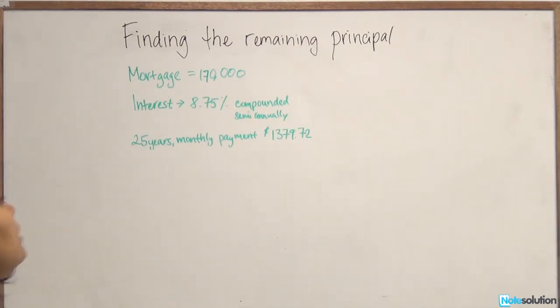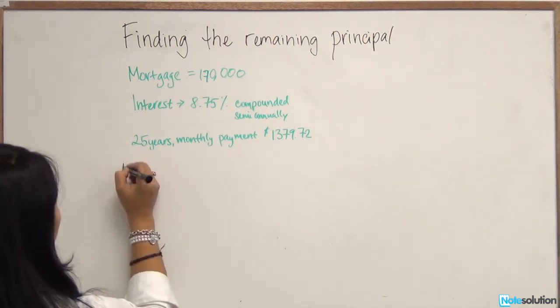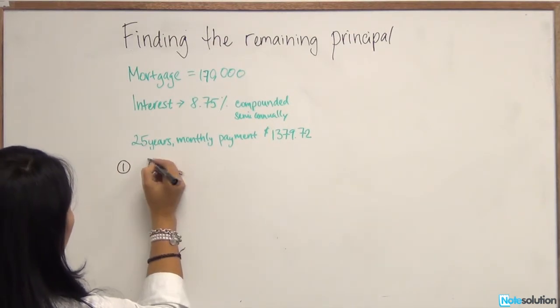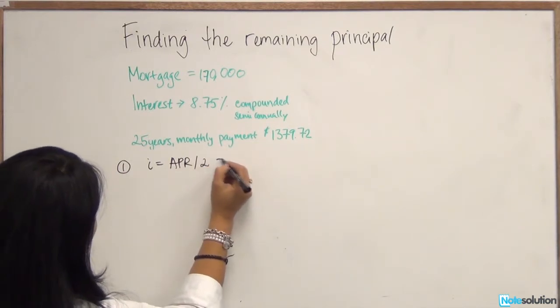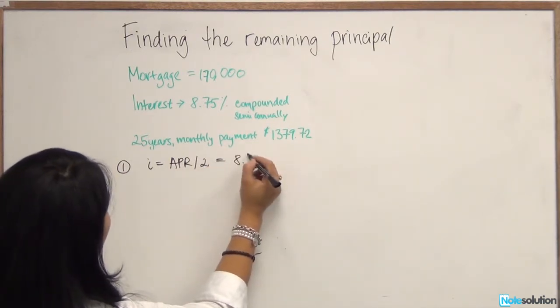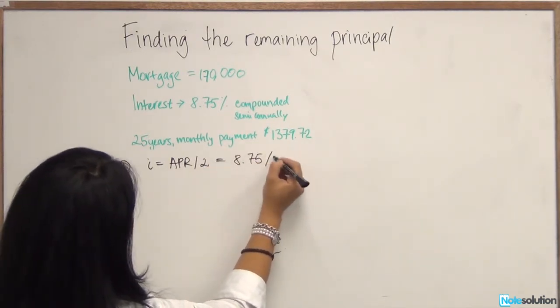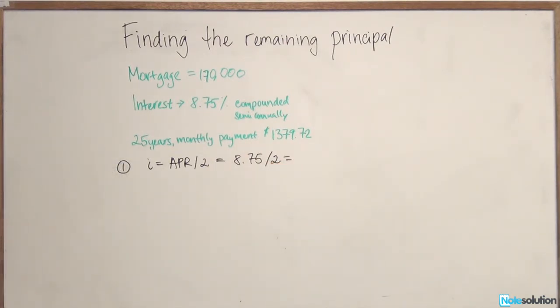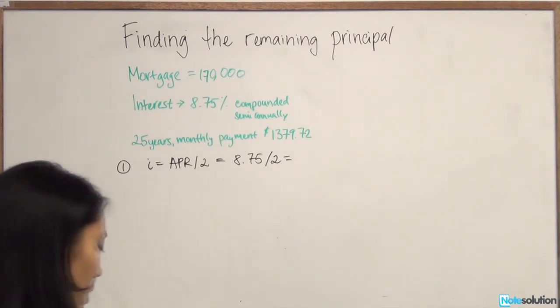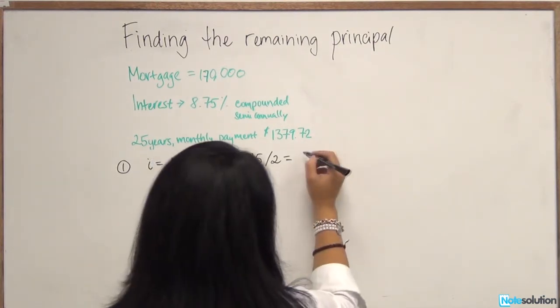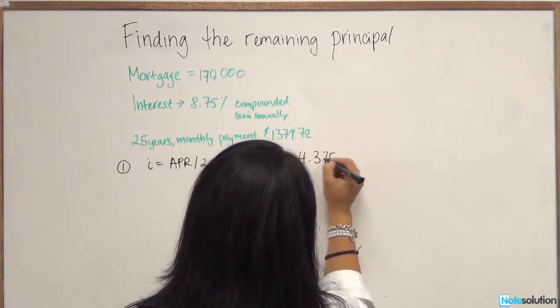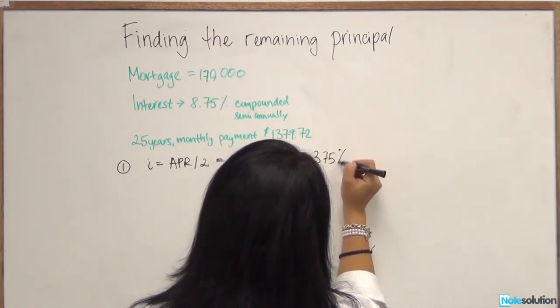To calculate the monthly interest rate, we're going to follow the steps. The first step is find I, which is defined as APR divided by 2. So it's 8.75 divided by 2. Why divide by 2? It's compounded on semi-annual terms, so it's twice a year. That gives us 4.375%.